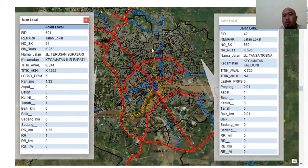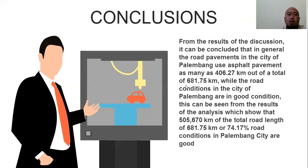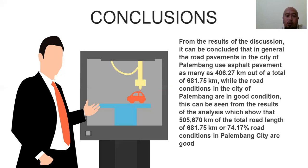The conclusion from the research: in general, road pavement in Palembang city uses asphalt pavement for 406.27 kilometers out of a total of 681.75 kilometers. The road condition in Palembang is predominantly good, as shown by the analysis result that 505.67 kilometers of the total 681.75 kilometers — or 74.15 percent — are in good condition.